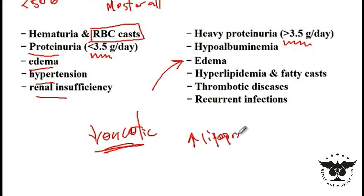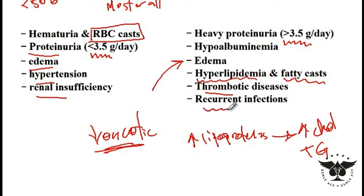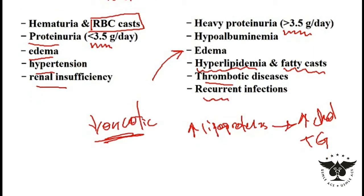Due to the decreased oncotic pressure, the liver increases production of lipoproteins, resulting in elevated cholesterol and triglycerides. So these patients also present with hyperlipidemia and fatty casts. In addition, they present with thrombotic diseases because of the loss of antithrombin and plasminogen in the urine, leading to recurrent thrombosis of the deep veins and renal vessels. There's also increased risk of infection because immunoglobulins can be lost in the urine.